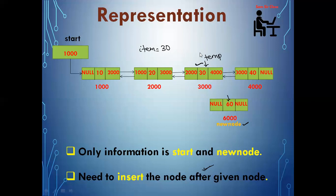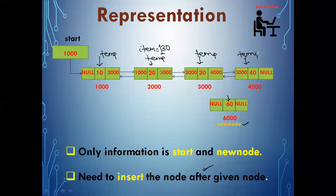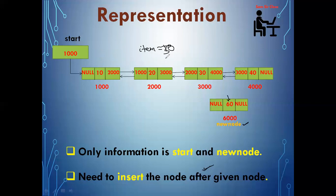Suppose the second case: I enter the value I need to search, which is 130. I'll start searching from the first node. Temp info is not equal to 130 — true — so temp moves to the next node. Temp info is not equal to 130 — continuing through all nodes. Now temp will become null. When temp becomes null, my searching is over. My searching will end in two cases: either I found my value, or I didn't find it because that node is not present in the list.